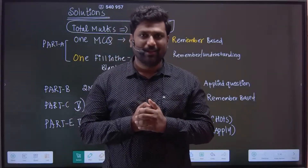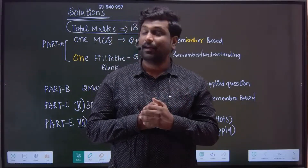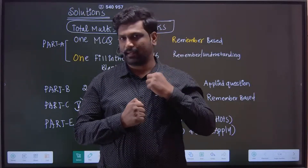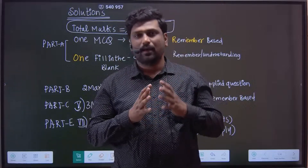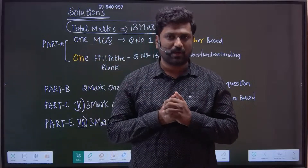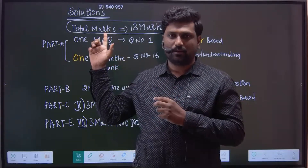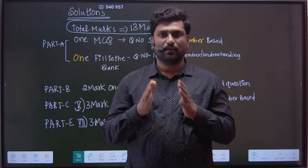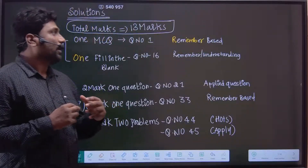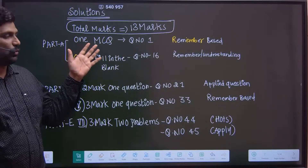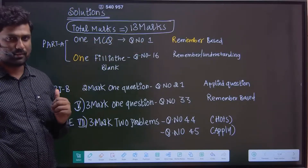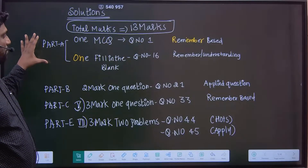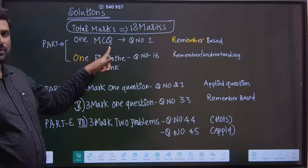Hello dear students. Now, second PUC Chemistry — Solution chapter examination. For the annual examination, important questions about the weightage from the exam point of view. The marks distribution: the total marks in the Solution chapter are 13 marks. If you go through the distribution, Part A has two marks.